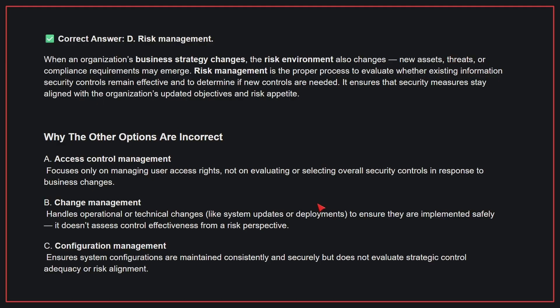When an organization's business strategy changes, the risk environment also changes. New assets, threats, or compliance requirements may emerge. Risk management is the proper process to evaluate whether existing information security controls remain effective and to determine if new controls are needed. It ensures that security measures stay aligned with the organization's updated objectives and risk appetite.